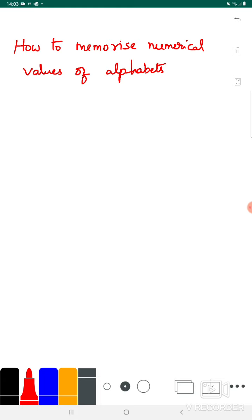To memorize the numerical values of the alphabets, first you need to remember this code called E Jyoti. Jyoti means light, so E Jyoti, electronic Jyoti.